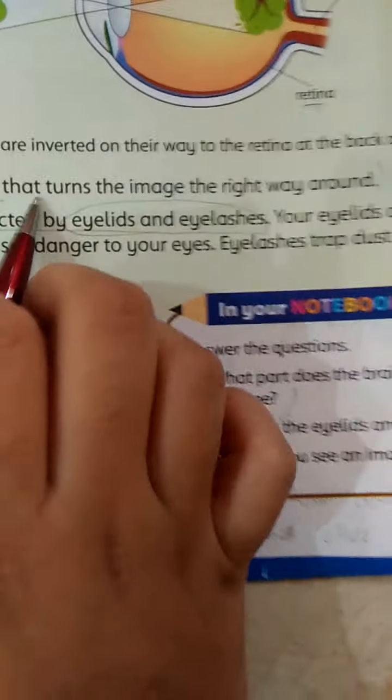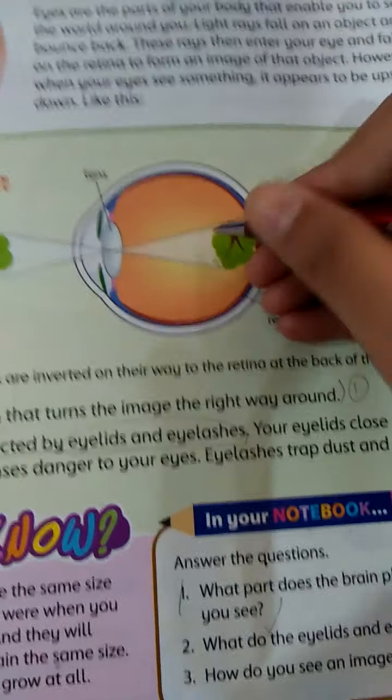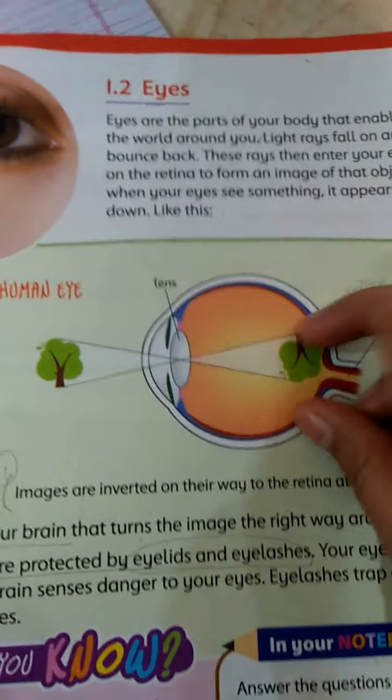It is your brain that turns the image the right way around. Our brain helps us because the brain helps us to show the image.